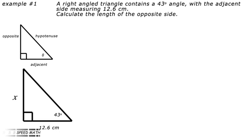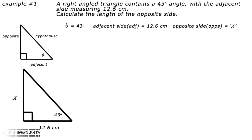Example 1: a right-angle triangle contains a 43 degree angle with the adjacent side measuring 12.6 centimeters. Calculate the length of the opposite side. First, analyze the information: theta equals 43 degrees, adjacent side equals 12.6 cm, opposite side equals X (unknown). The answer is to two decimal places.